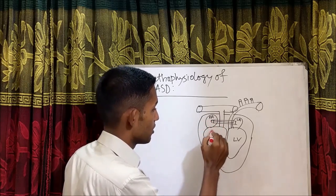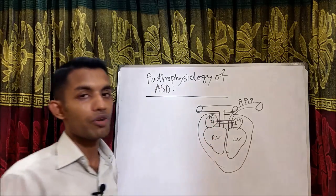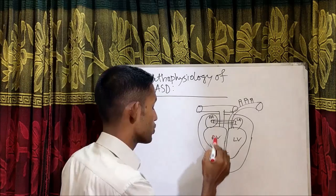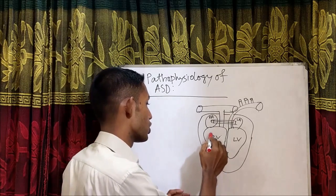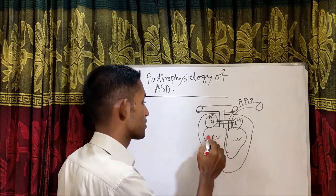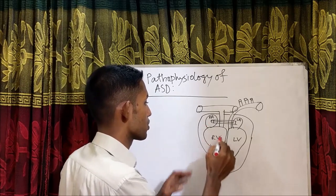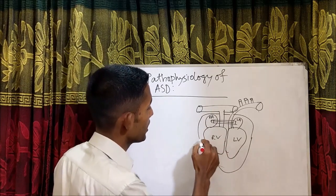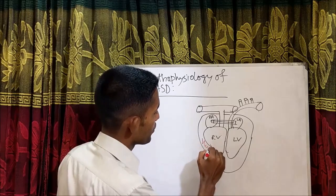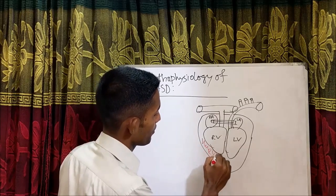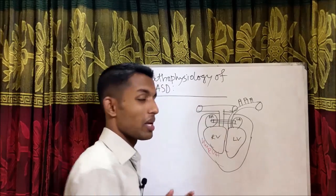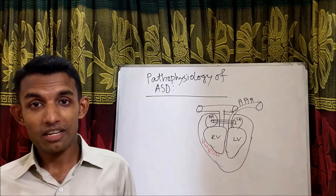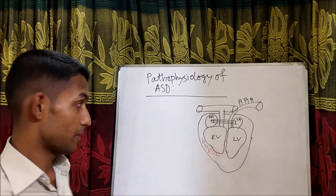The only problem is that the volume in the right atrium increases, so right ventricular volume is also increased. Due to this volume overload there is continuous stretching on the ventricular wall, and there may be right ventricular hypertrophy, pulmonary hypertension, and heart failure.